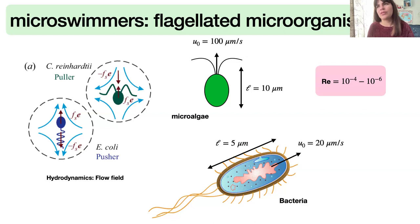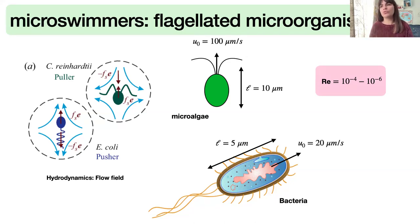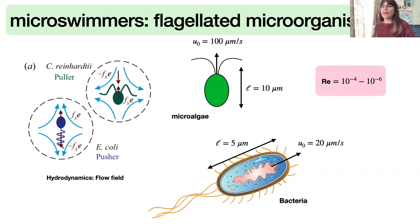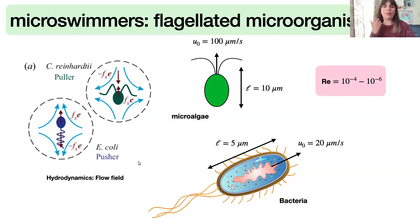In my talk, I will refer a lot to microswimmers. For us, microswimmers are flagellated microorganisms that exert a flow field. All the fluctuations we will measure and everything related to transport is only due to the hydrodynamic distortions that our microswimmers exert to the water column. We consider microswimmers as dipole forces — either pullers or pushers. Pullers are like microalgae, while pushers are like bacteria.